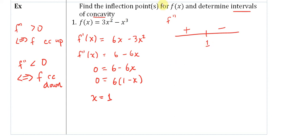From this, we can determine that f has an inflection point when x equals 1 because that's where the second derivative equals 0. To find that exact point, we plug 1 in for x and get 3 minus 1, which is 2. So the inflection point occurs at (1, 2).